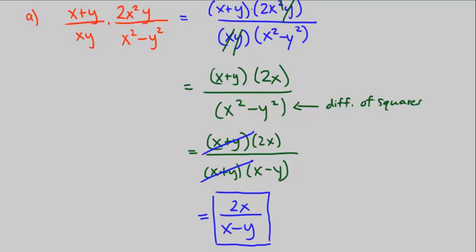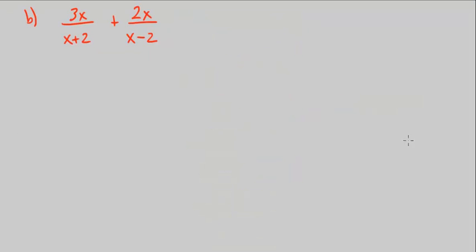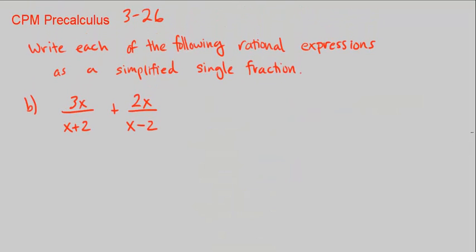Let's go on to part B. Part B, we're not multiplying. Here we're adding. So that means we need a common denominator. Anytime we add or subtract, we need to have a common denominator. In order for us to do that, we're going to have to multiply both of these times what's in the other one. So here, we're going to multiply by x minus 2. Then we're going to have a common denominator. But we're going to have to do that in the numerator as well.